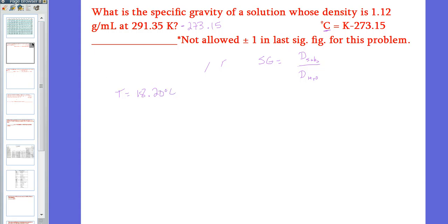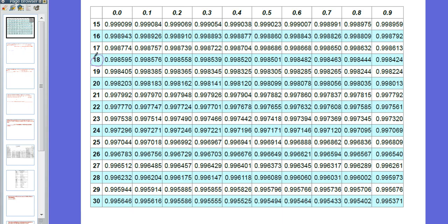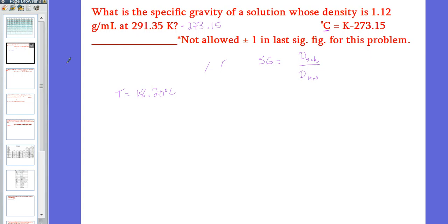So you go to your reference, here's your 18, here's your 0.2. So this is the density of water that you're going to use to solve the problem. So that's what you're going to put in for the bottom number.